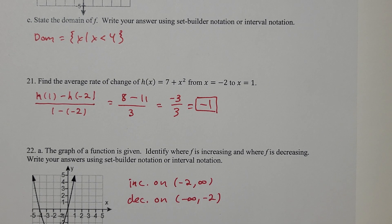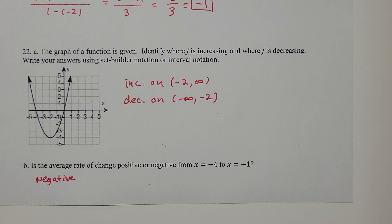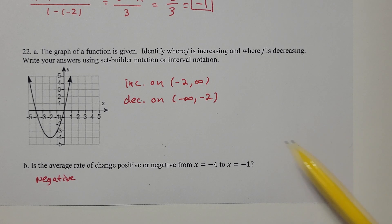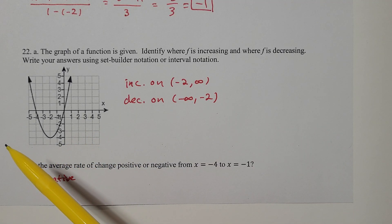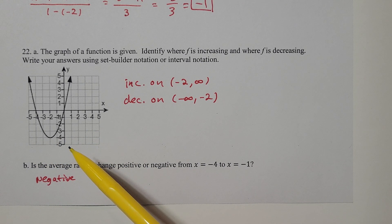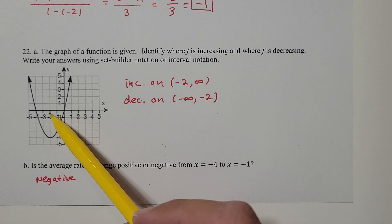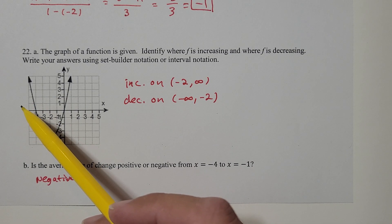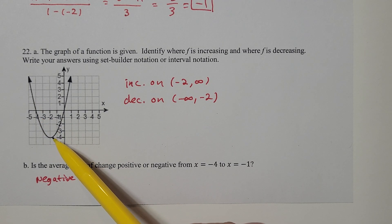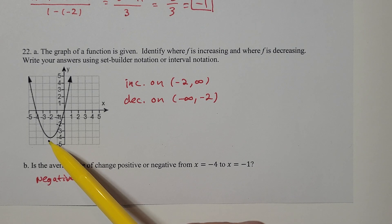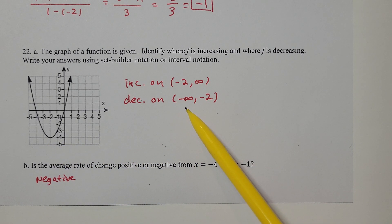Problem 22 says the graph of a function is given. Identify where f is increasing and where f is decreasing, answering in interval notation. We're looking at where we're rising and where we're falling as we scan the graph from left to right — you always scan left to right. It's all about x when we give our answer. Here's x = -2. Scanning from negative infinity to -2, the curve is falling, so f is decreasing on (-∞, -2).